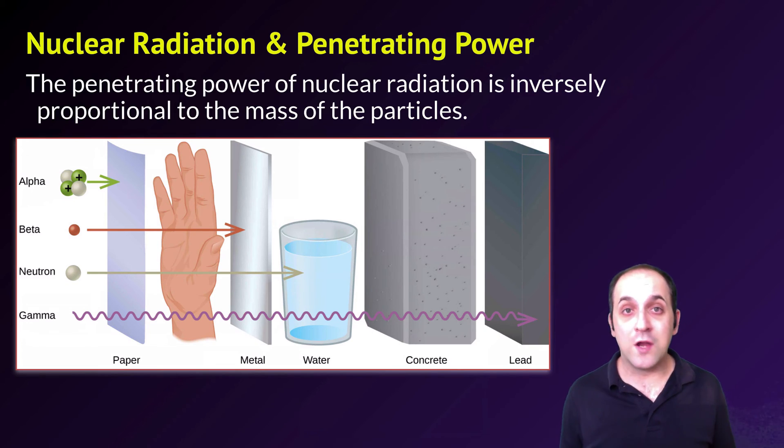Beta particles are considerably less massive and they can travel through paper, through human hands, before they're stopped by sheets of metal. Neutrons are actually more massive than beta particles, but they can travel a little bit further. And that is actually a function of their charge. The fact that they have no charge makes it much easier for them to travel through other atoms. And actually gamma rays, which are actually a form of high energy light, can travel through the most types of material and actually have to be stopped by large pieces of concrete or lead.